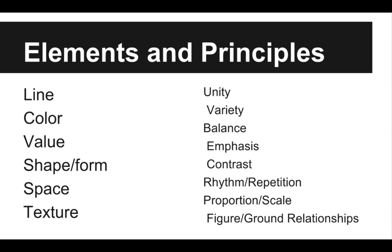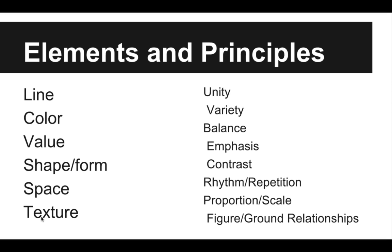An overview of what the elements and principles are: the elements are line, color, value, shape and form, space, and texture. Each one of these elements has special things to understand about them. For example, line — there are many different types of lines, and there are ways that artists use line to create emotions. Color — there is the whole study of color theory, really understanding what colors mean, how colors interact with each other, and all of those things.